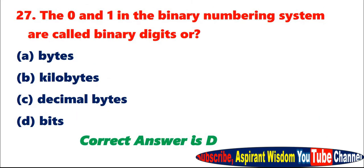Question 27: The 0 and 1 in the binary numbering system are called binary digits or A. Bytes. B. Kilobytes. C. Decimal bytes. D. Bits. Correct answer is D.